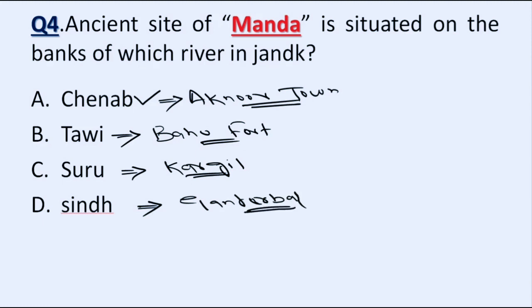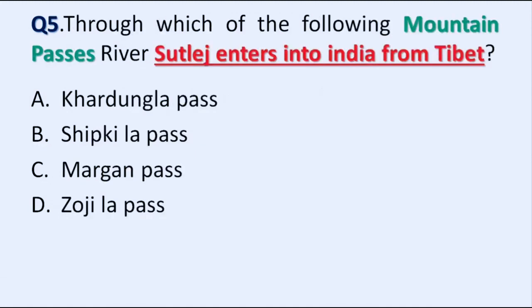Our next question is: through which of the following mountain passes does River Sutlej enter India from Tibet? Option A: Khardung La Pass, B: Shipki La Pass, C: Morgan Pass, D: Zoji La Pass. Correct answer is Option B, Shipki La Pass. River Sutlej enters India through Shipki La Pass in Himachal Pradesh.